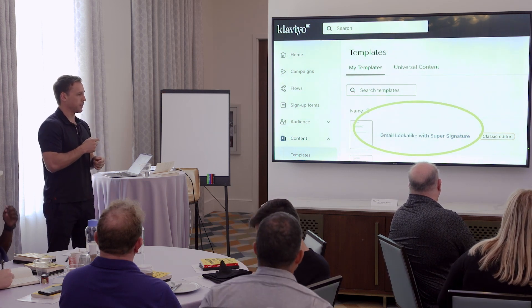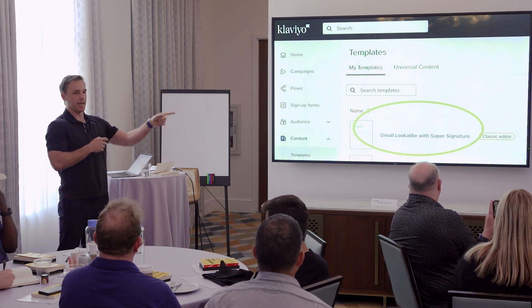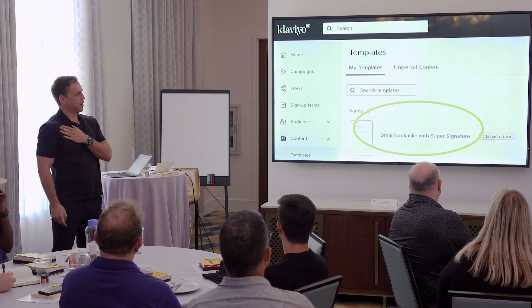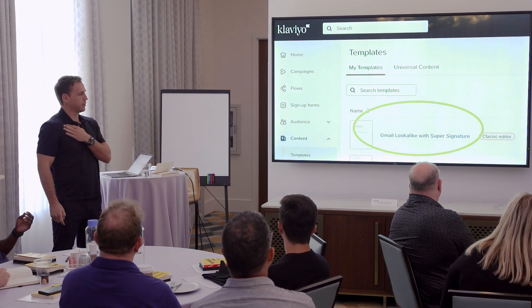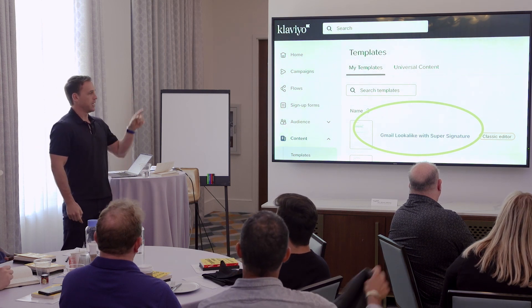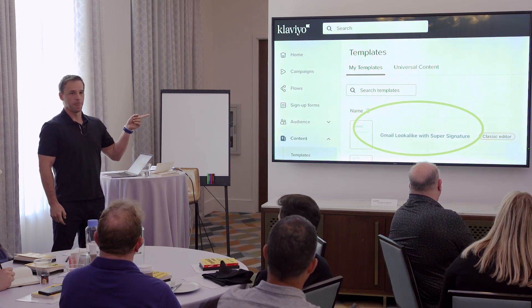This is actually one of my Klaviyo accounts. I always have an email template that looks like this, and I use it almost exclusively. I call it the Gmail look-alike super signatures - the Gmail look-alike is the important part. I try to make my marketing email look like it comes from me, from a real person. So if you're sending an email from your brand this may not work as well, but if you use your name, like it's coming from a real person, I want that to look and feel like a Gmail email.